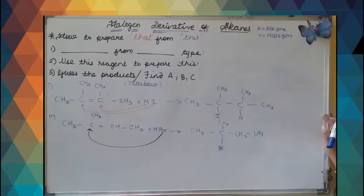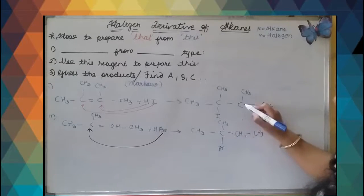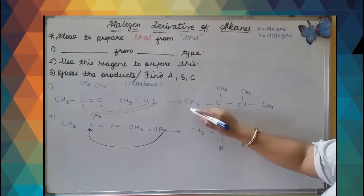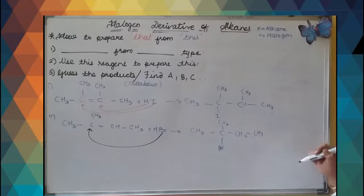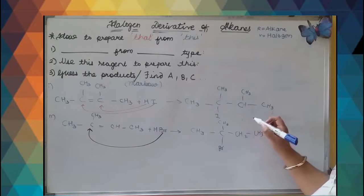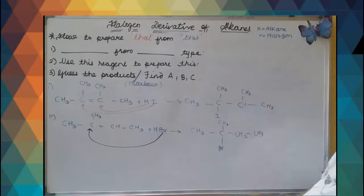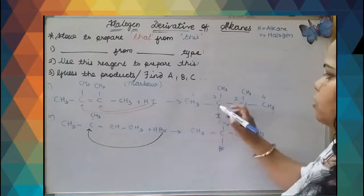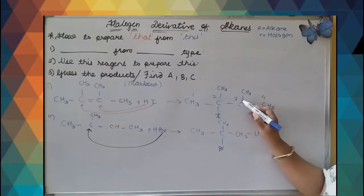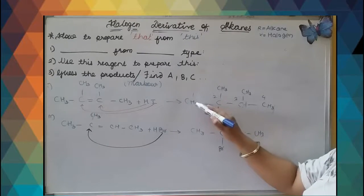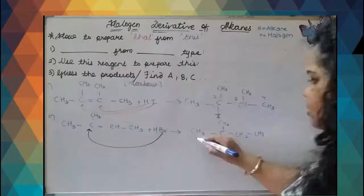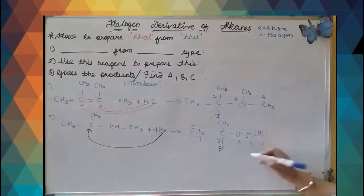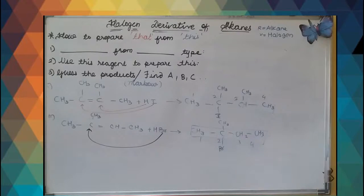According to IUPAC naming, we will write it down - longest chain. Numbering 1, 2, 3, 4. Butane. Numbering 1, 2, 3, 4. 2-bromo-2-methylbutane.